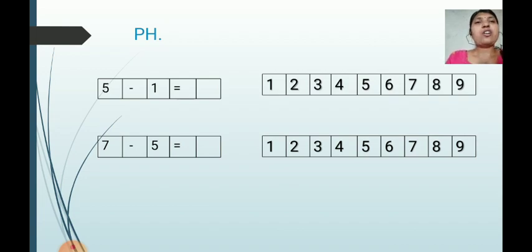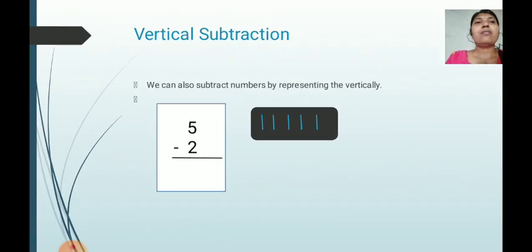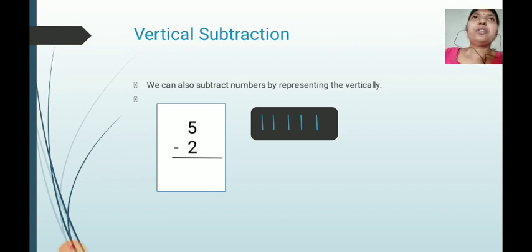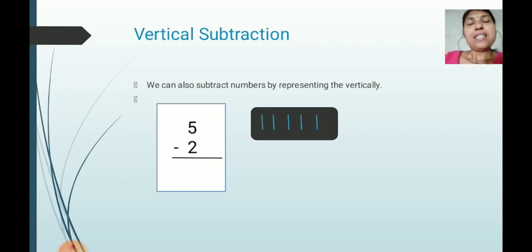Now we will move to our next topic: vertical subtraction. Just like addition, you can also subtract numbers by writing them vertically. Let us look at the method using an example: 5 minus 2. Here you draw lines and cross them out.